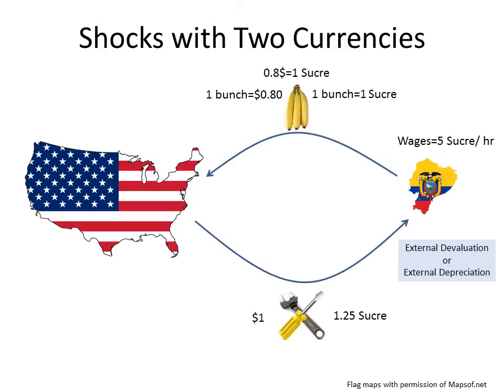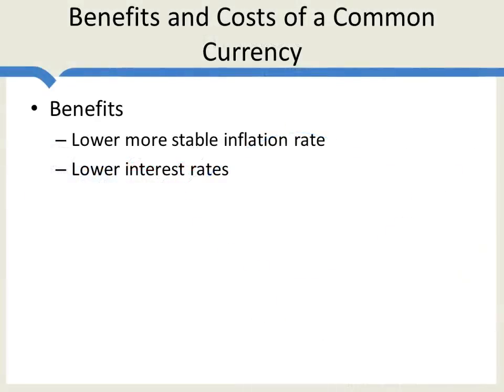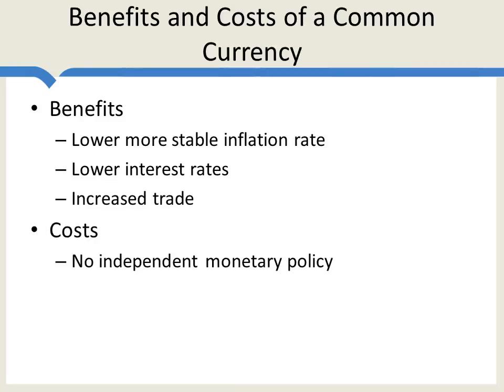So summing up: the benefits of a single currency are a lower and more stable inflation rate, lower interest rates, and increased trade. The costs are no independent monetary policy, meaning a lesser ability to respond to shocks. In the next lecture, we'll apply these ideas and this model to the euro. Thanks.